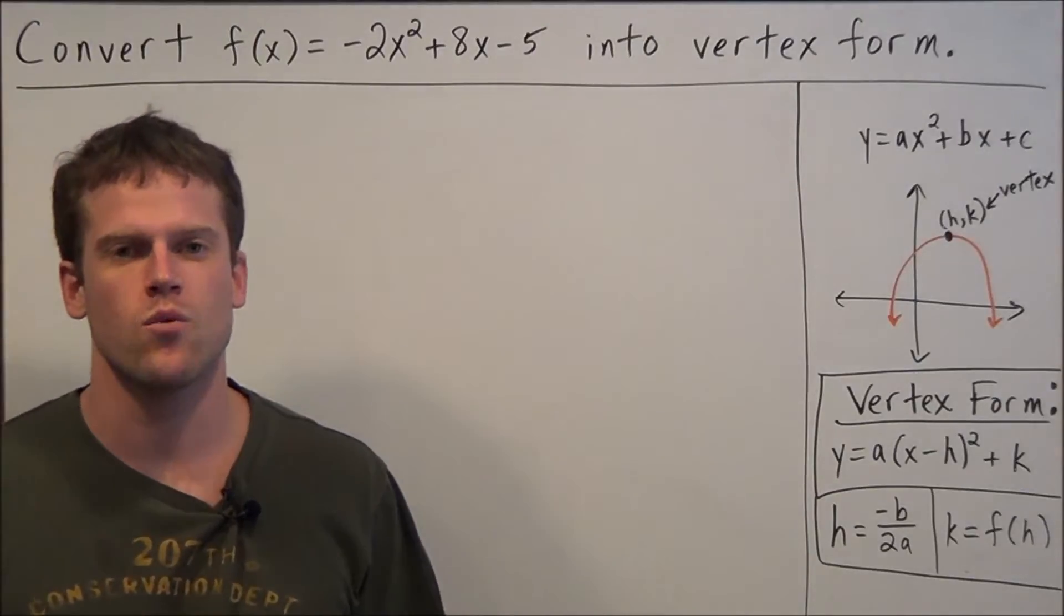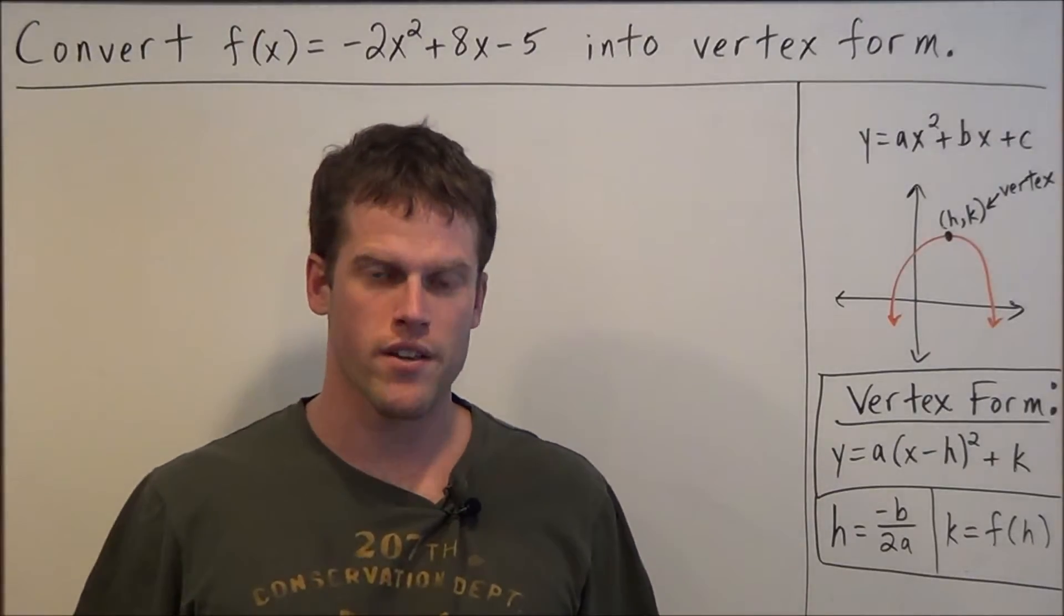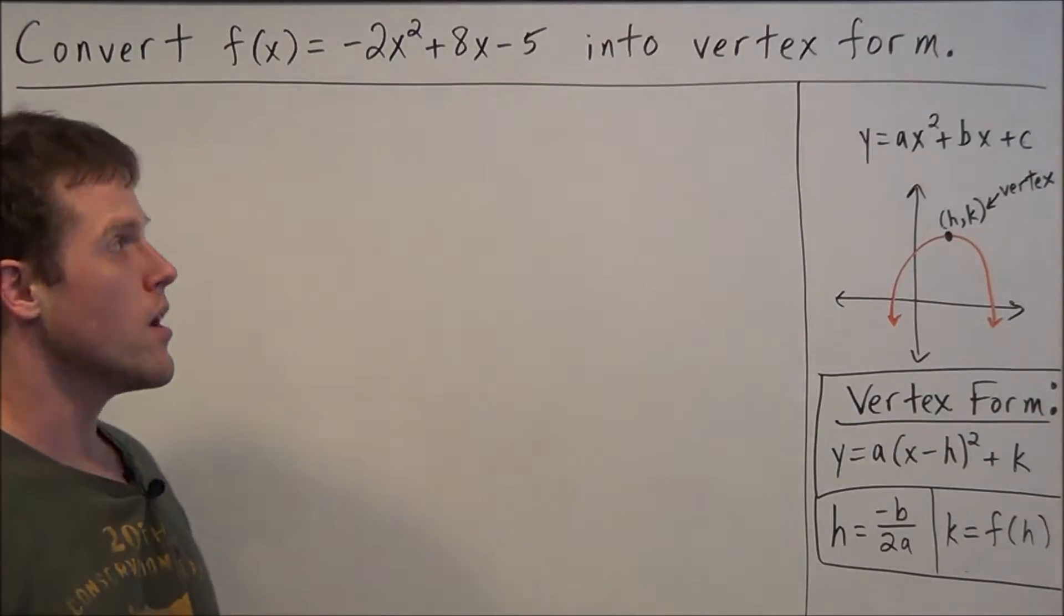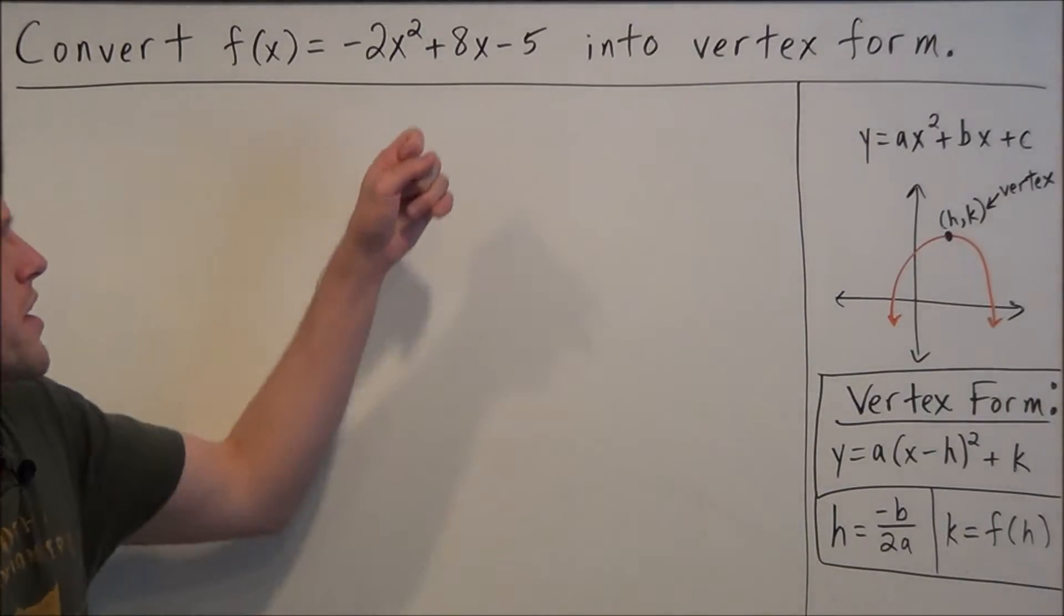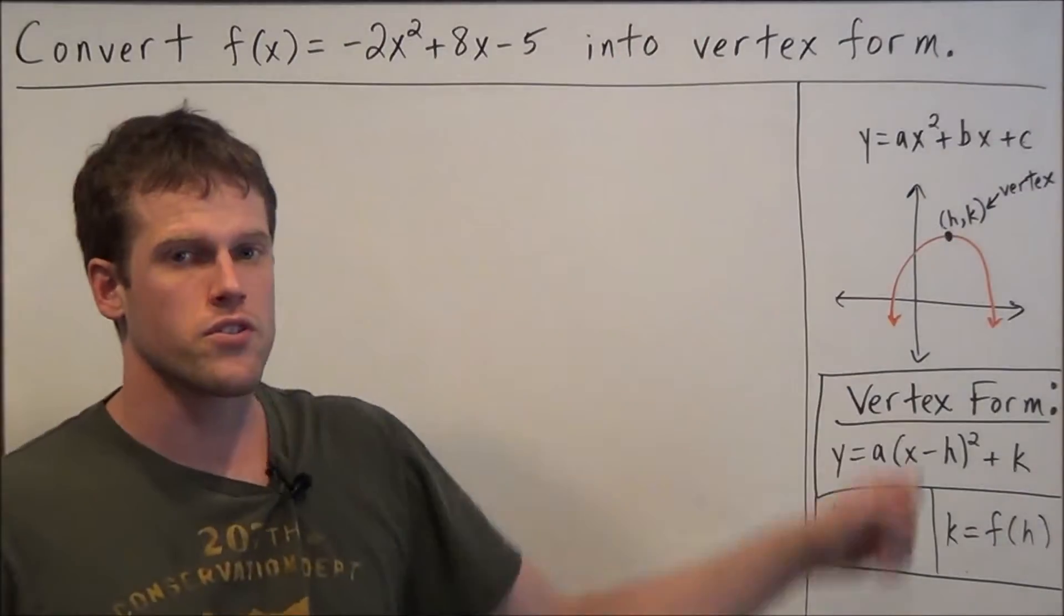Hi, my name is Vincent and today I want to take a look at how to write a quadratic equation in vertex form. So we have convert f(x) equals negative 2x squared plus 8x minus 5 into vertex form.